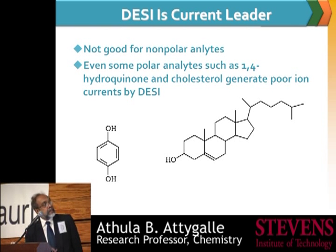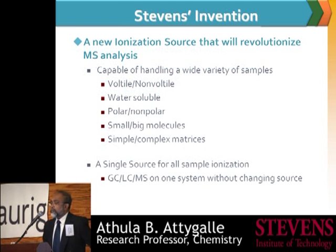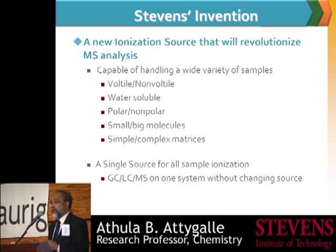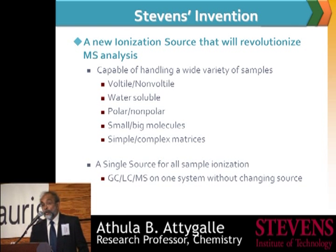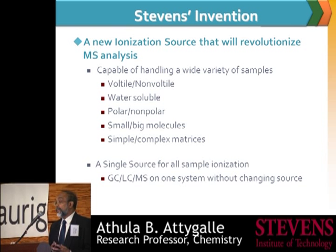What we have done is some modifications to these techniques and come up with a new technique where we can detect these compounds. Not only that, the existing mass spectrometers are designed normally to take only one ionization technique at a time. So our idea was to see whether we can combine into a combined source where we can deal with various materials like volatile, non-volatile, water-soluble, polar, non-polar, small molecules, big molecules — everything built into one.